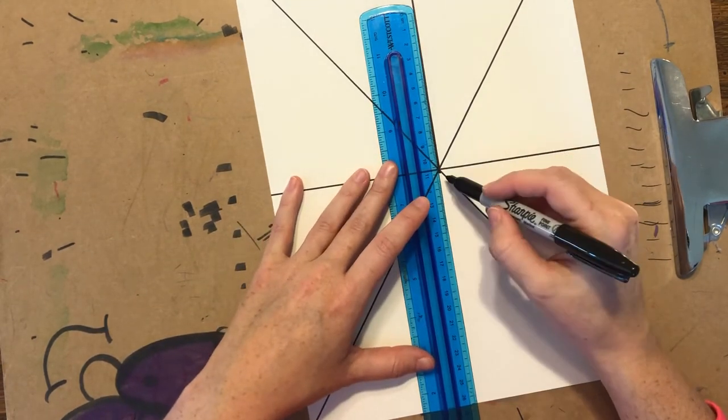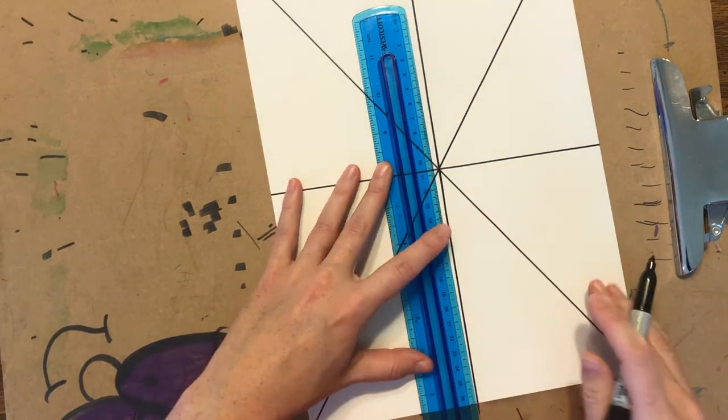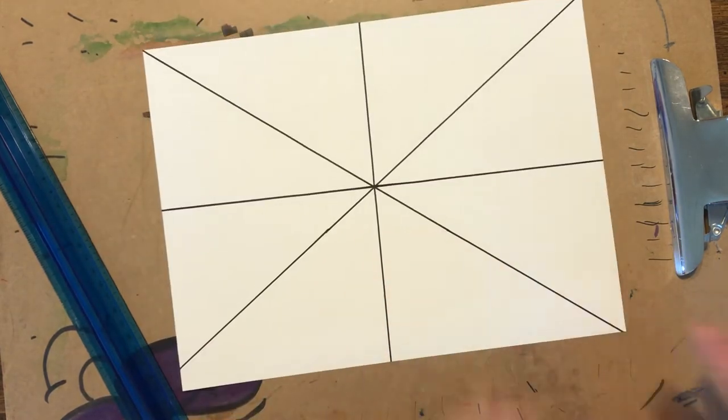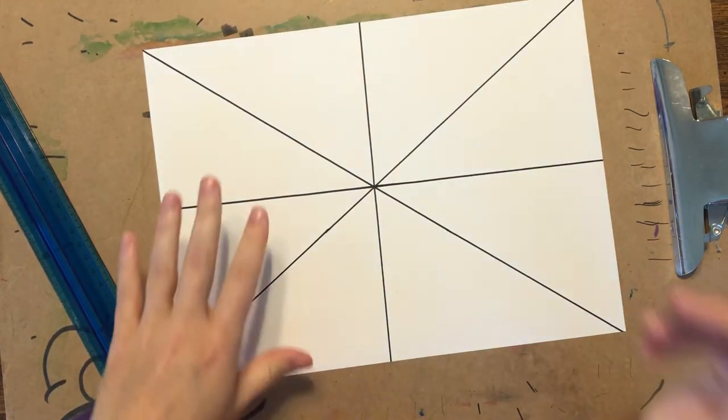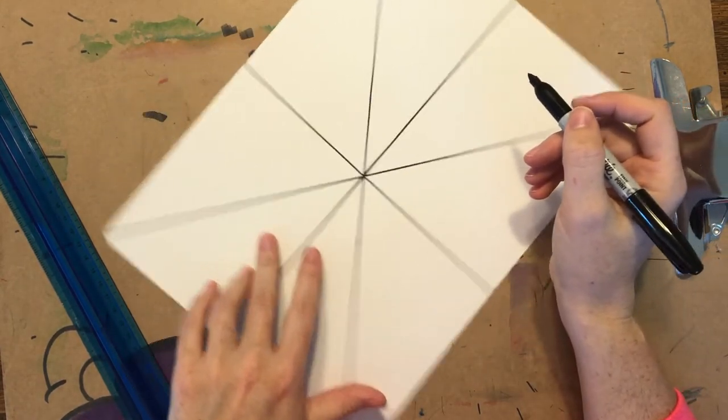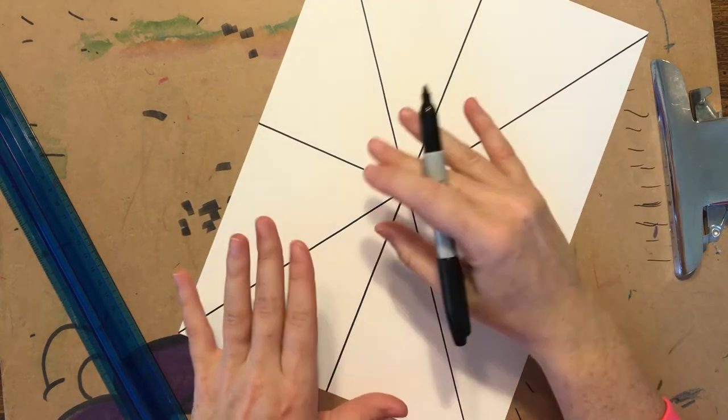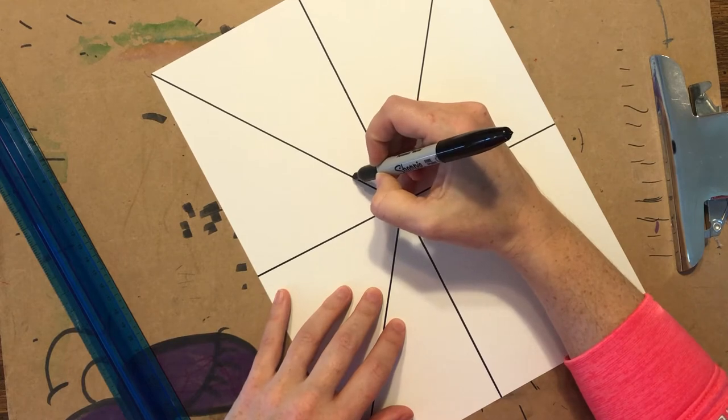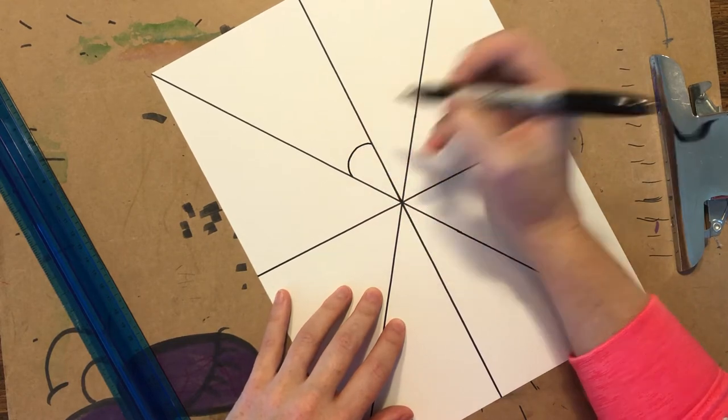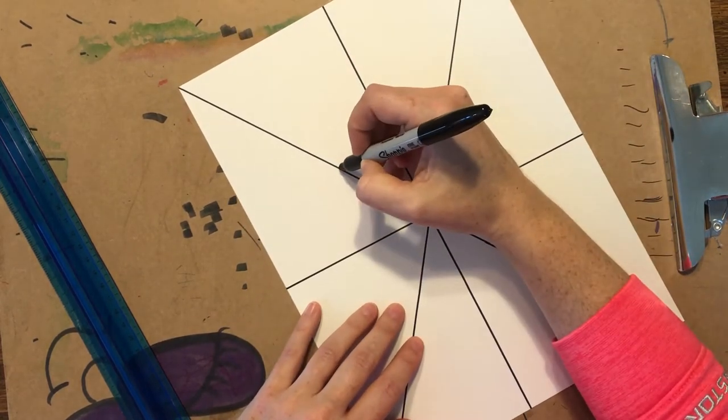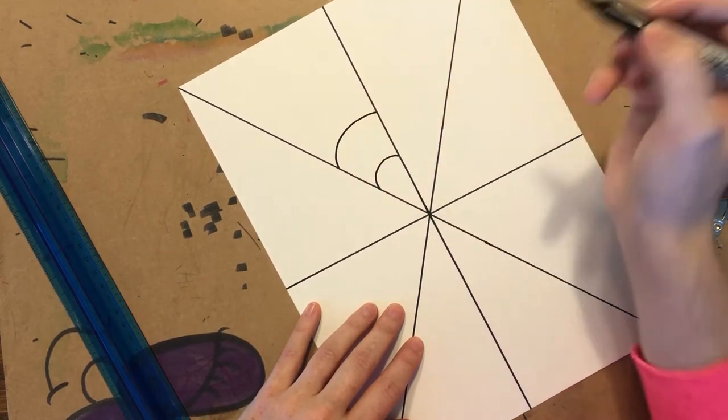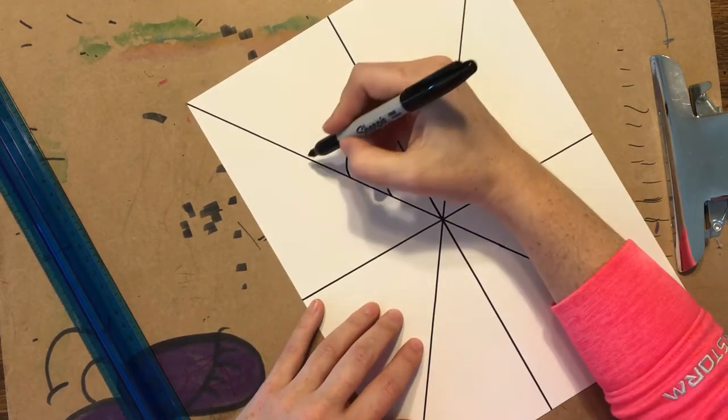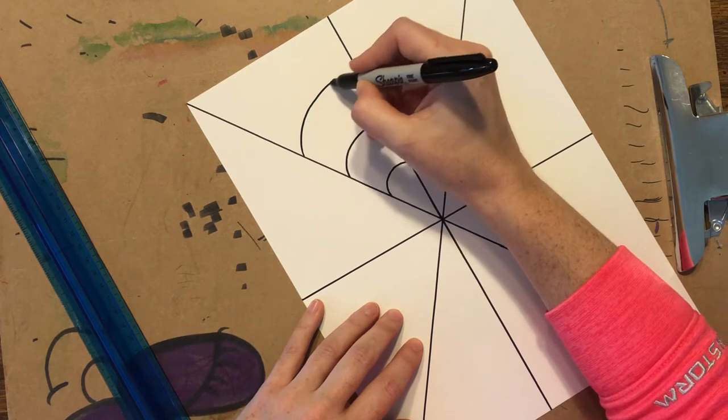And then we're going to do some curved lines. Now you should be using a pencil in case you make a mistake. I am going to be using my sharpie so that you can see. So we are going to make some sad and happy lines. How are we doing that? I'm going to make some curves. So this is going to look sad. Give yourself some room. Don't make them too tight. You can always add more in if you want.